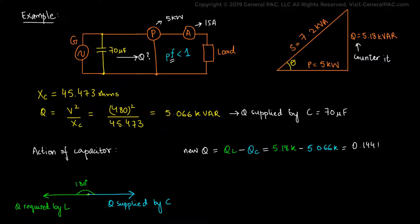Using this newly calculated value of reactive power, 0.114 kVAR, we can finally calculate the apparent power using Pythagorean theorem, which comes out to be about 5.0013 kVA.